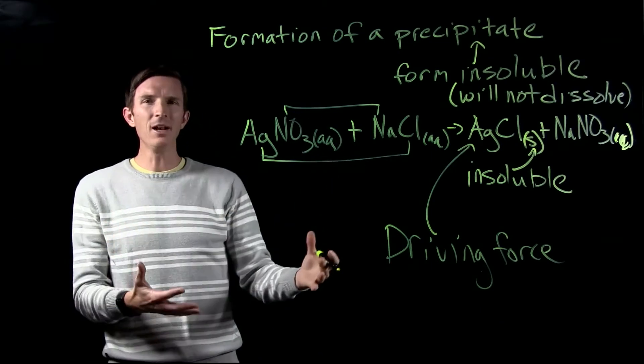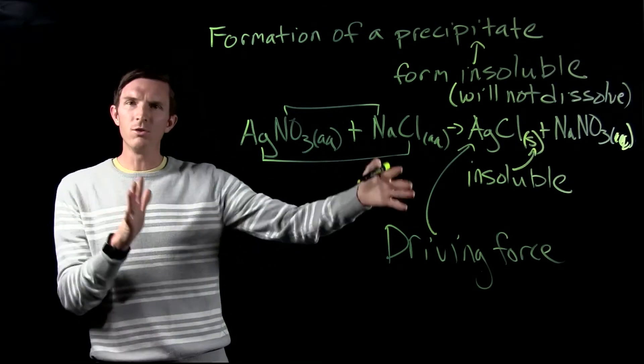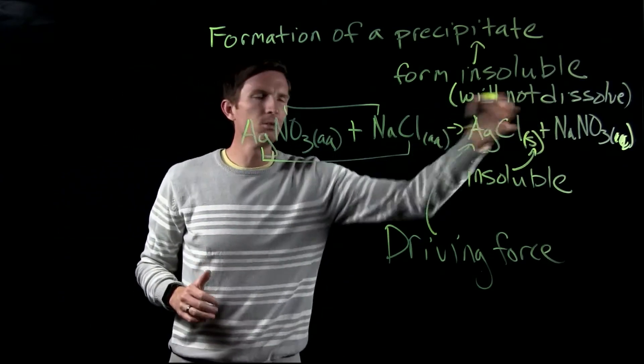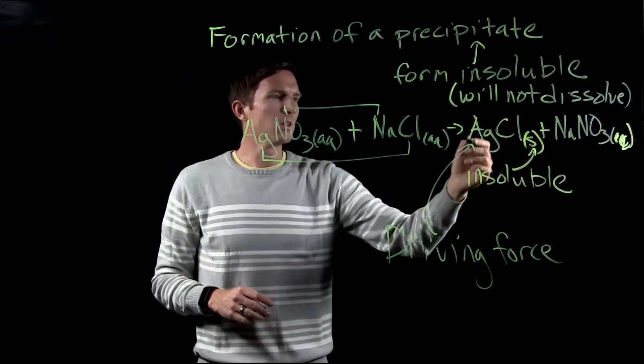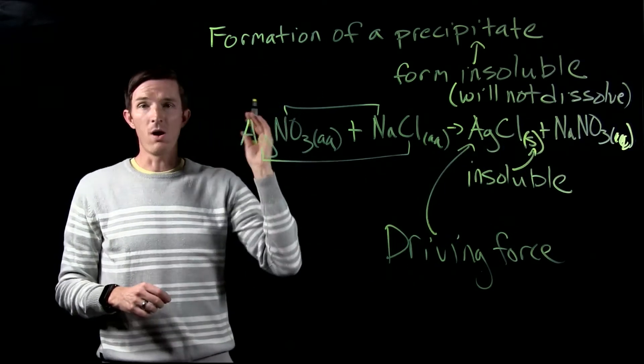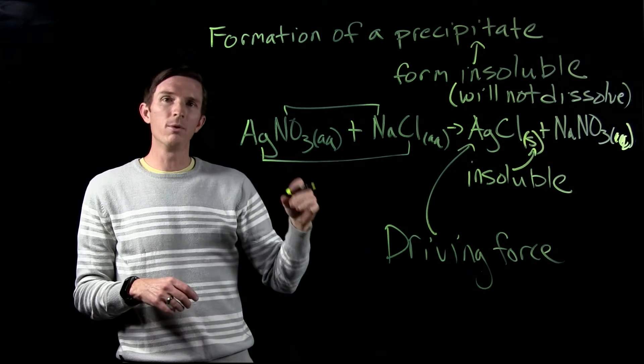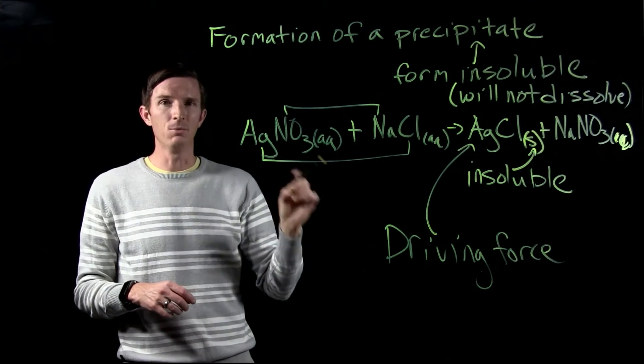So we see as we're trying to identify precipitate reactions, we go through the normal, figure out what are our two products that are formed from our double replacement reaction. Then we got to look at those two new compounds. Are they both soluble? Is one of them insoluble? Are we forming something that will not stay dissolved in water?